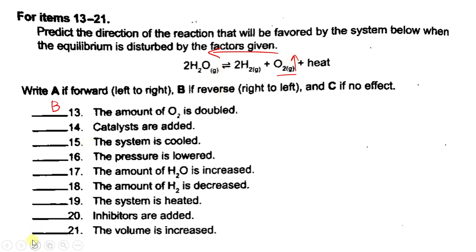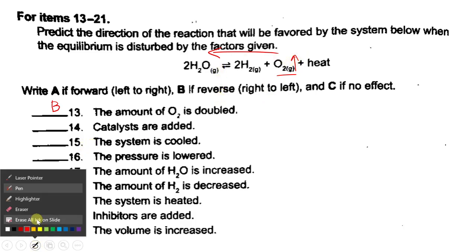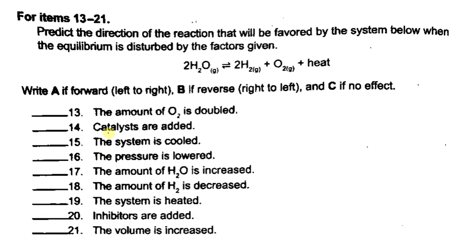Number 14: catalysts are added. Catalysts speed up reactions. In this case, catalysts speed up both the forward and the reverse reaction. So overall, it will have no effect on the equilibrium. So number 14, the answer is letter C — no effect.